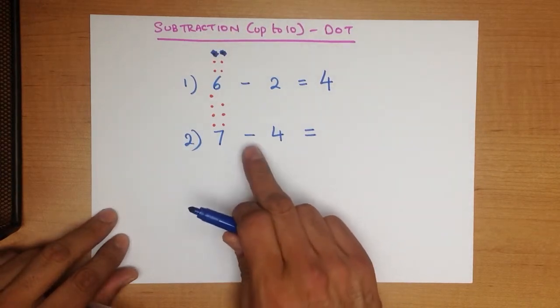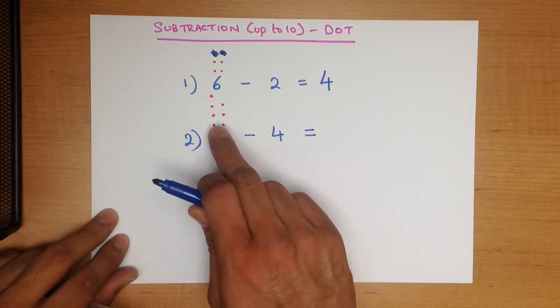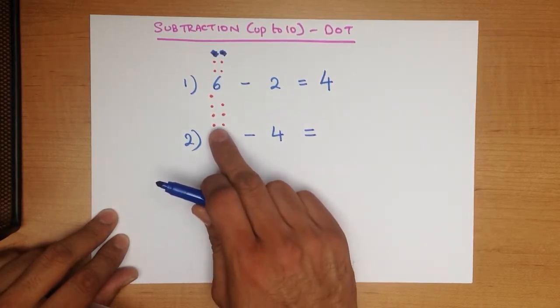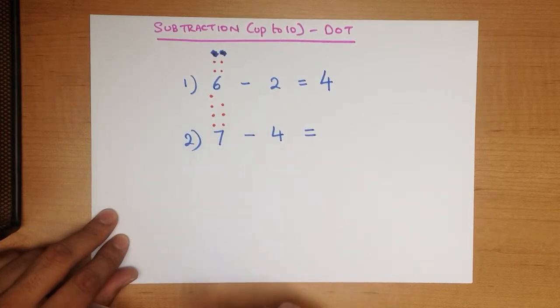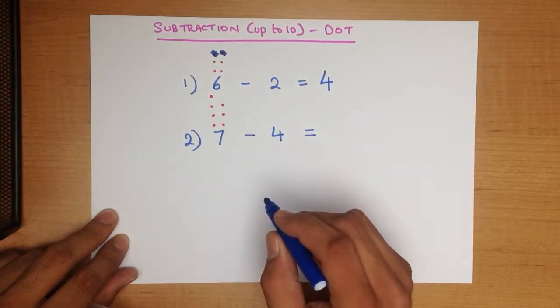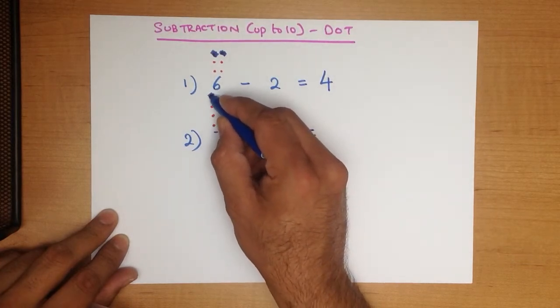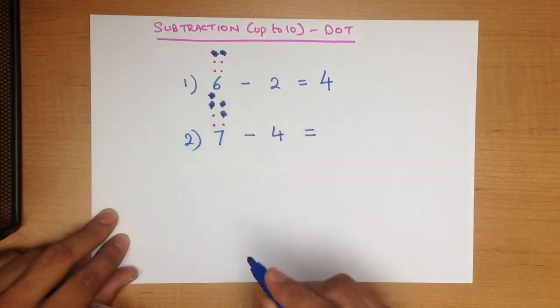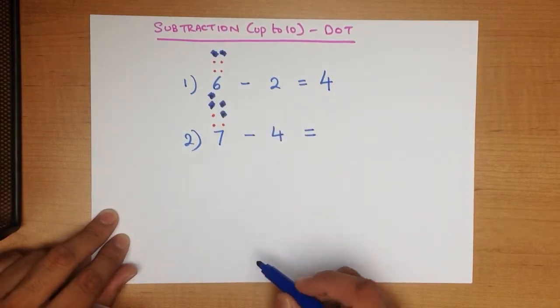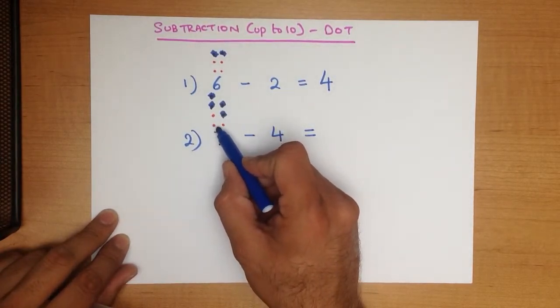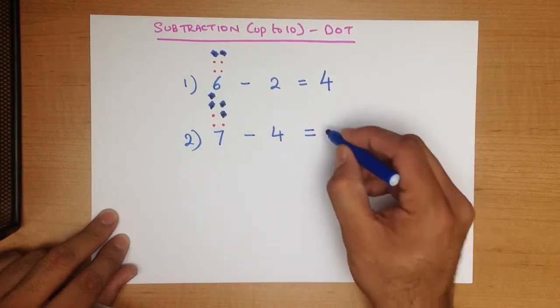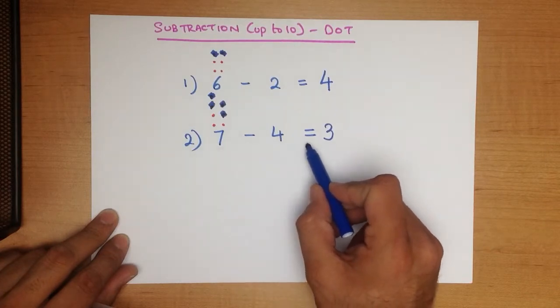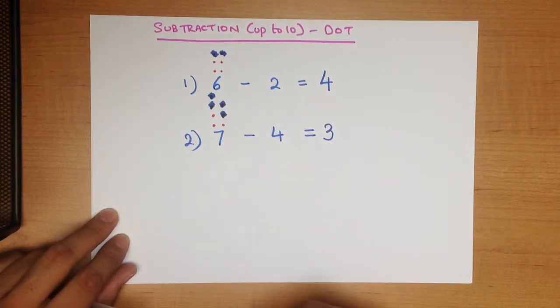We are taking away. So what we are going to do is we are going to cross out a few dots here. How many are we going to cross out? We are going to cross out 4. So let's cross 4 dots out. 1, 2, 3, 4. How many dots are left? 1, 2, 3. And that's our answer. 7 minus 4 equals 3. It's as simple as that.